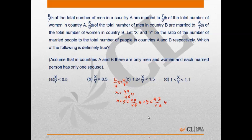Now, we can calculate value of A. It comes out to be total number of married people, that is twice of either total number of married men or twice of total number of married women. We have calculated value of total population of country A in term of y.